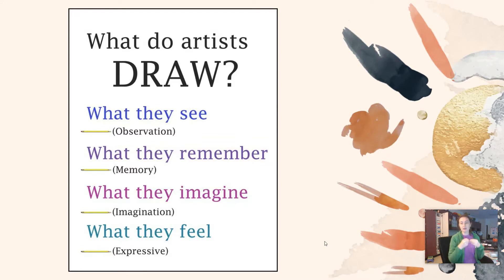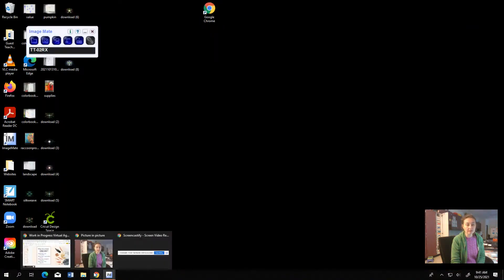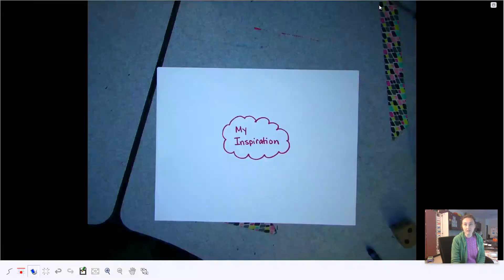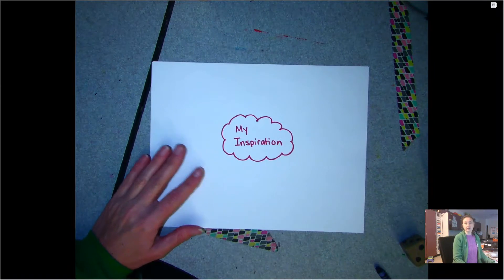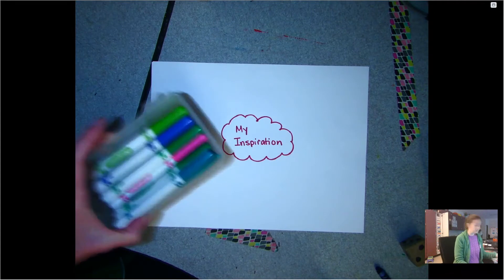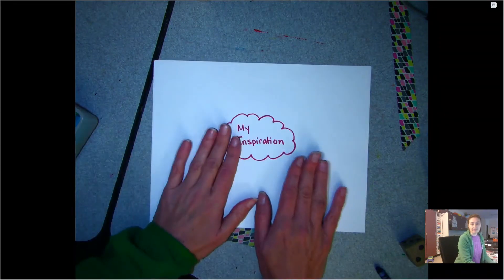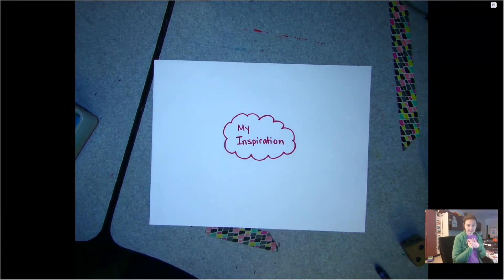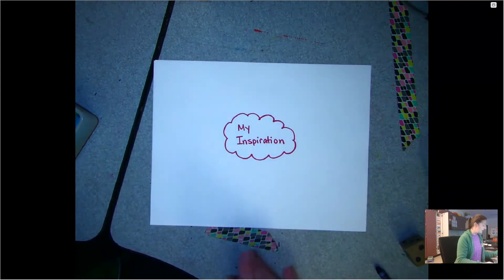Today we're going to look at our own personal ideas and create a mind map. You are going to do this either in your sketchbook or just on a piece of paper. You can make it colorful — most mind maps are colorful, so I have a set of markers here. In the middle, I have 'inspiration,' which is where I would get my ideas, and then we're going to branch out with other bubbles.